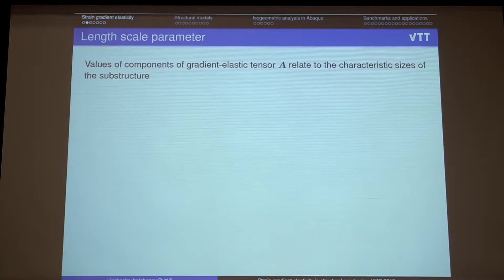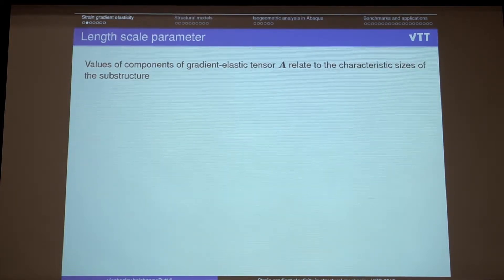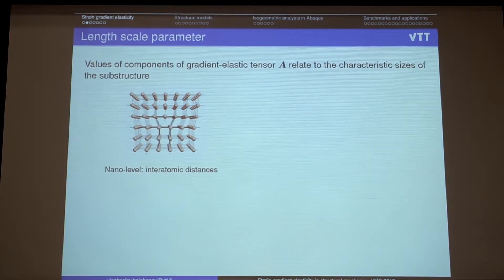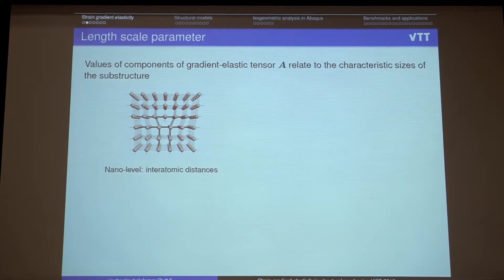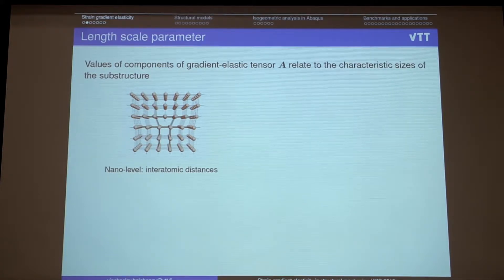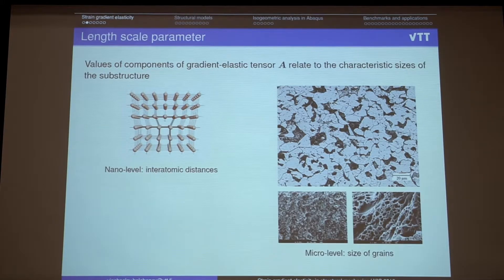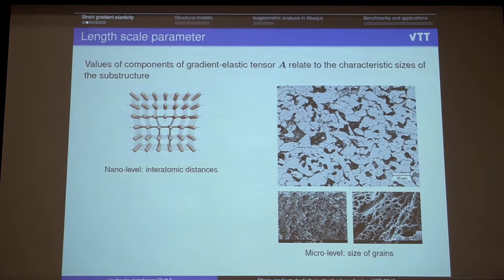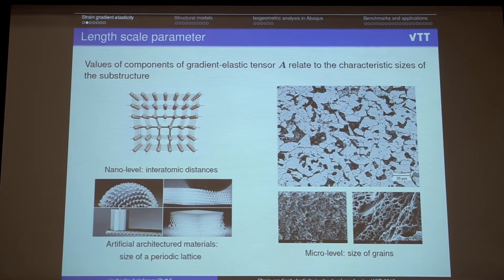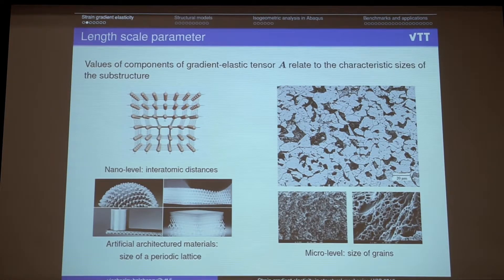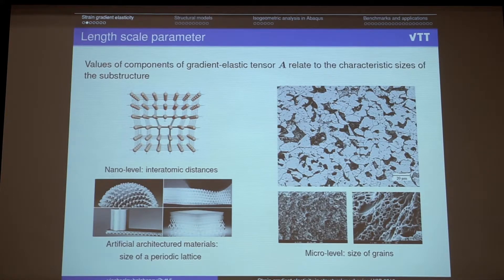And what is these constants, these new constants are about? I have a lot of discussions with different scientists, and also in literature can be found different values of such parameters, and it seems that if we consider some structures on the nano level, these material parameters are related to some interatomic distances. On the micro level, they relate to the sizes of grains in metals or some holes in porous materials. And in some artificial architectured materials, it's somehow related to the size of a periodic lattice. And this size can be of any range from micrometers to even meters.